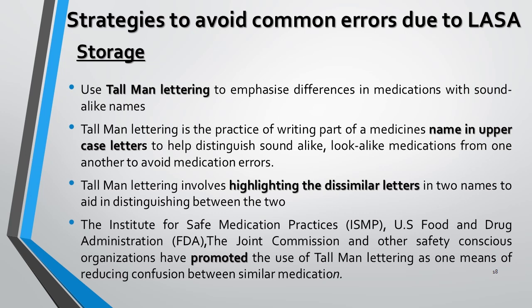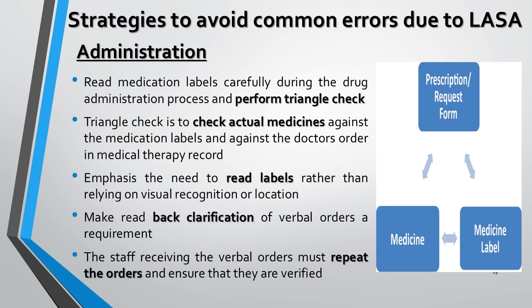For sound-alike medications where tall man lettering is not applicable, proprietary, brand, or trademarked names may be added to distinguish between medications. Before performing a triangle check, medication labels should be read carefully at all dispensing stages. The triangle check involves verifying actual medicines against the medicine labels and against the prescription, and identifying medicines based on name and strength rather than appearance or location.